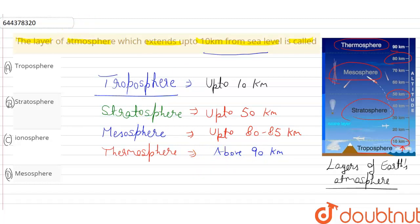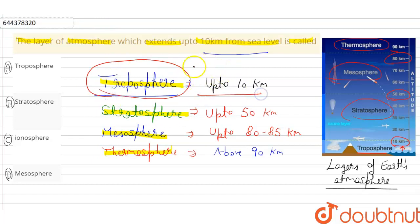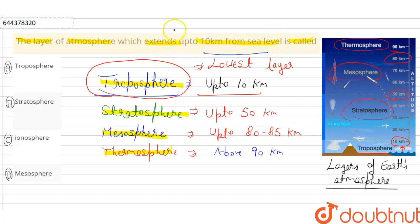These are the layers of the Earth's atmosphere, and we can see that the troposphere is the lowest layer of the Earth's atmosphere. Most of the mass of the atmosphere is in the troposphere, and all weather occurs in this layer.